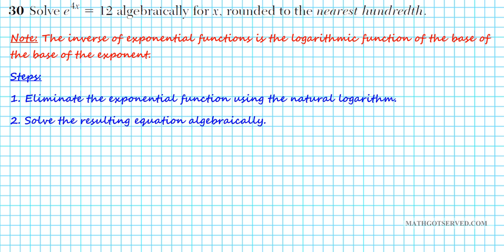All right. Let's take a look at problem 30. It says, solve E to the 4X equals 12 algebraically, rounded to the nearest hundredth. So, one thing you want to note is that the inverse of the exponential function is the logarithmic function of the base of the exponent. Steps we're going to use for this problem: first of all, we are going to eliminate the exponential function using natural logarithms since this is E. This is log base E. This is E, so log base E is LN, the natural logarithm. We're going to use that to basically eliminate this exponential nature of this function. And then, we'll have a linear algebraic equation, a simple algebraic equation that we can solve in just one step.